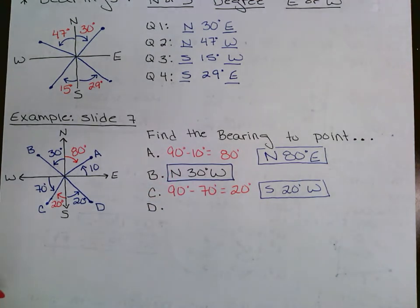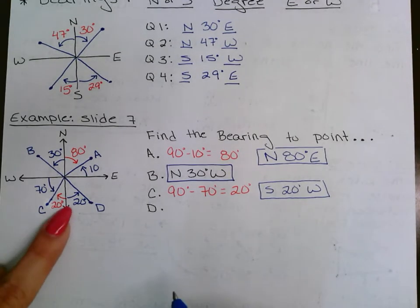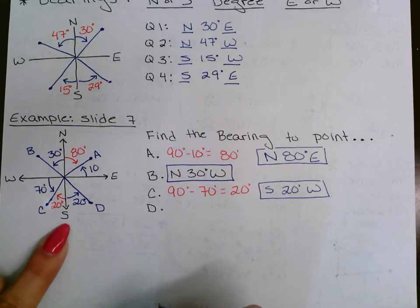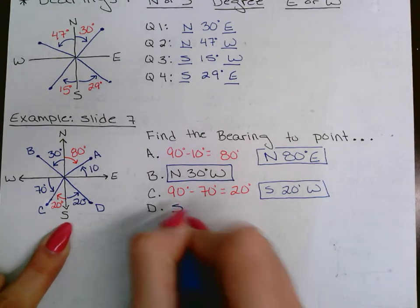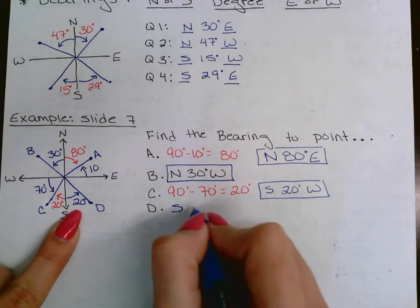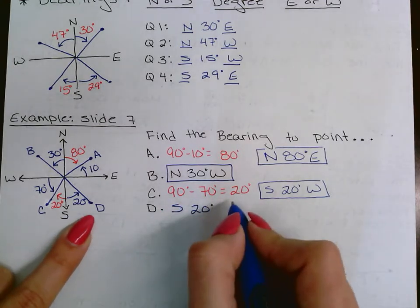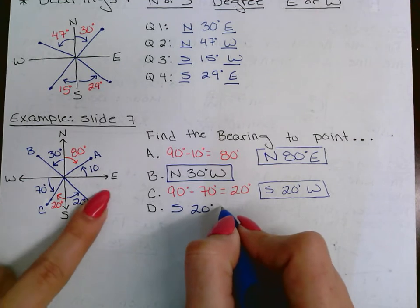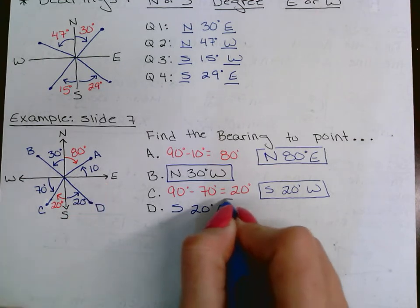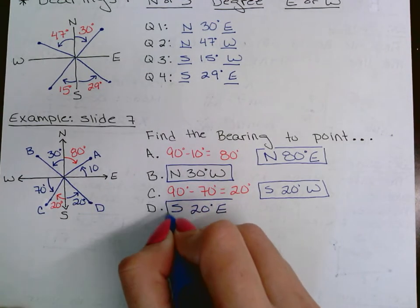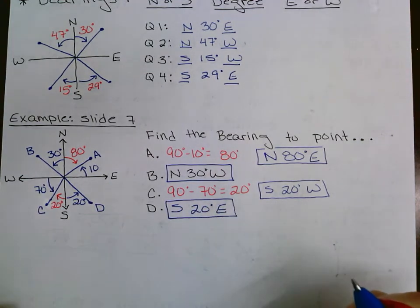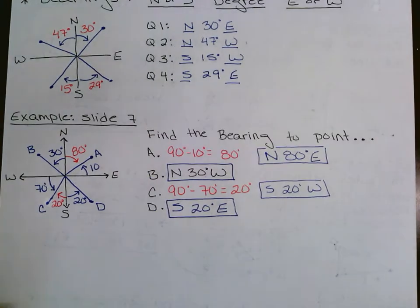Point D is in quadrant 4, starting from south toward east. They did start from south, so no adjustment needed. The bearing for D is S 20° E.